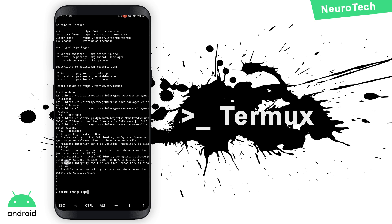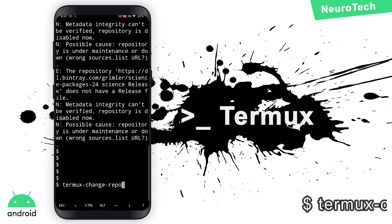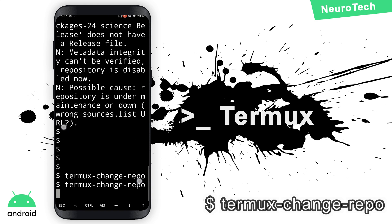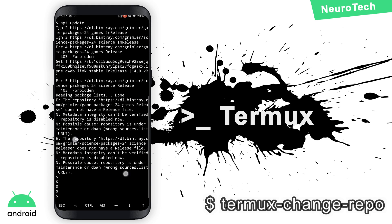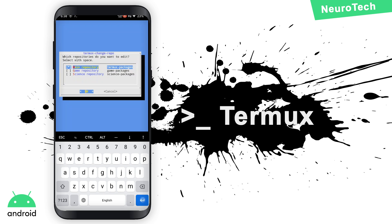Enter: termux-change-repo. This screen is shown on the screen. Then enter. The window has come up. Use the space key to mark and mark. Then press OK.